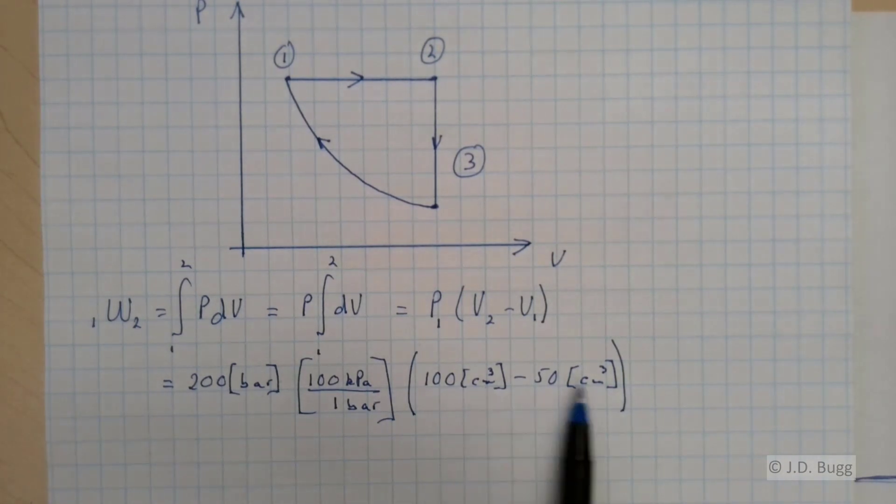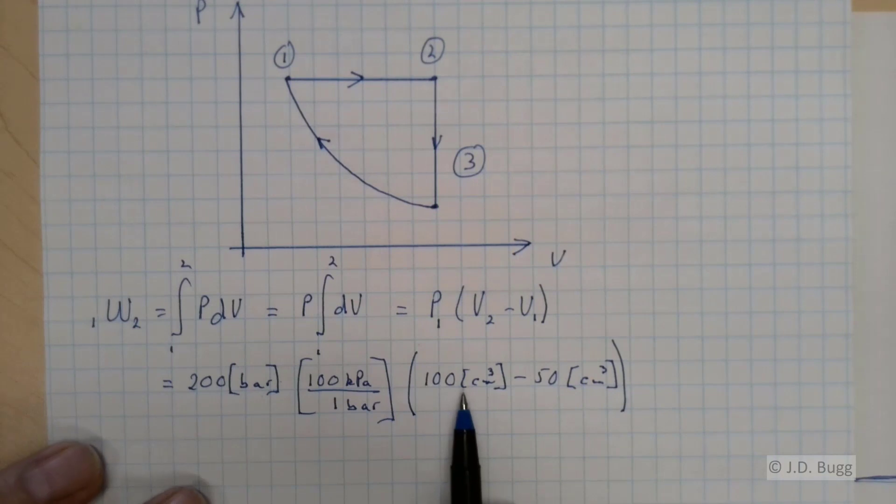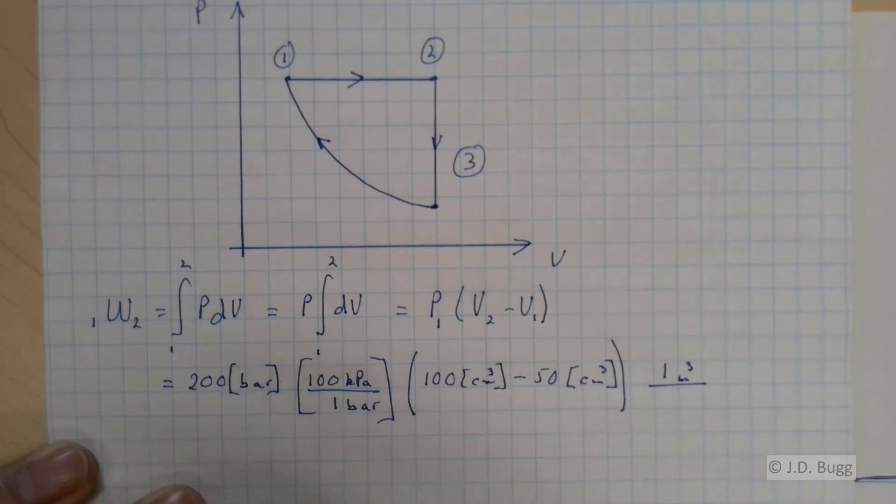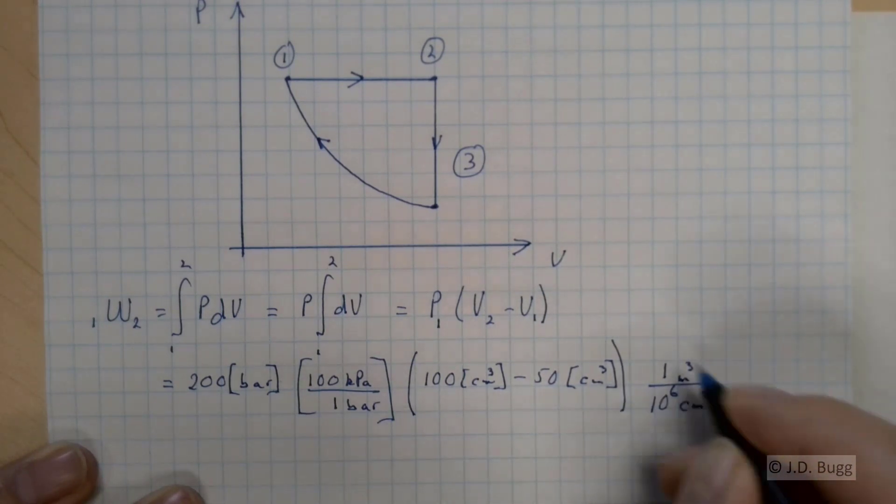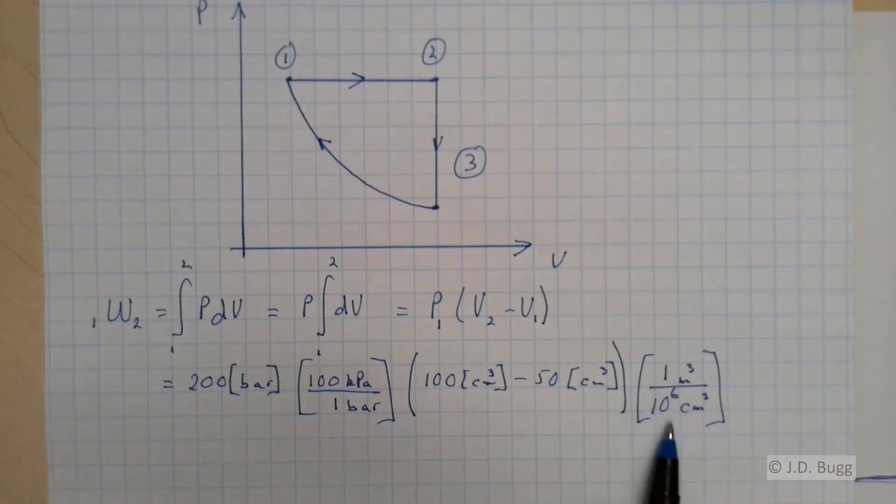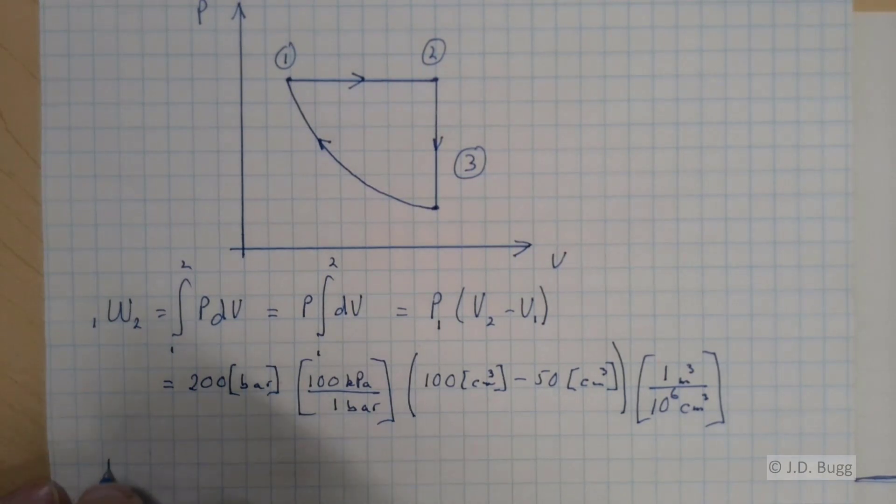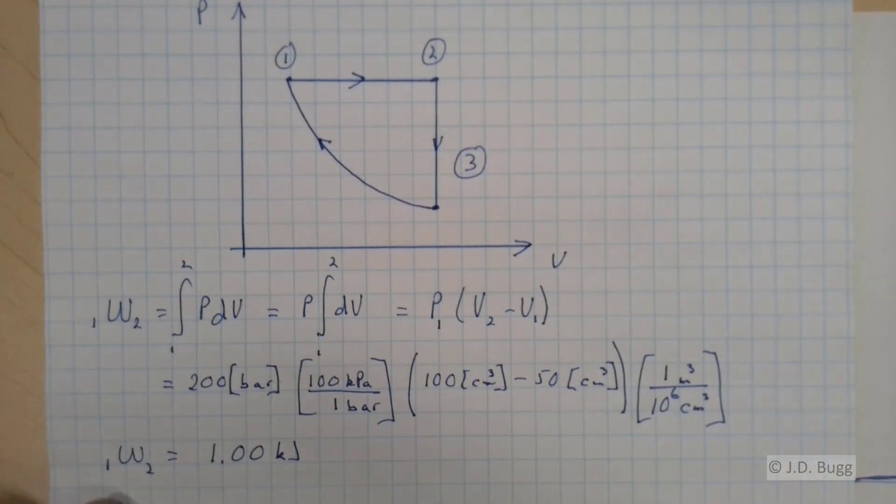And then we're ready to put our volumes in. So the two volumes are 100 centimeters cubed minus 50 centimeters cubed. And likewise, we need this volume change to be in cubic meters. One cubic meter is one million cubic centimeters. So we calculate all of that out and we get our work from 1 to 2, and that works out to 1.00 kilojoules.